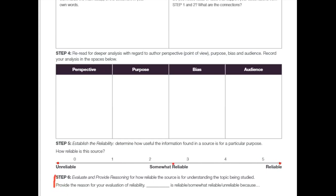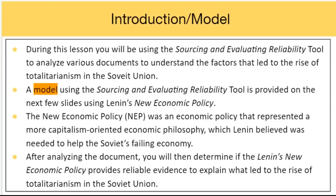You give your rating, and then Step 6 — this is social studies, so they're going to ask you why. What is the reason for your evaluation of reliability? You'll fill in: 'blank is somewhat reliable, somewhat reliable, or unreliable, because...' — that's what you're going to have to do in this lesson.